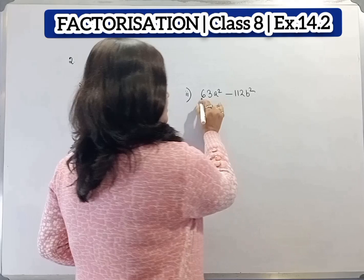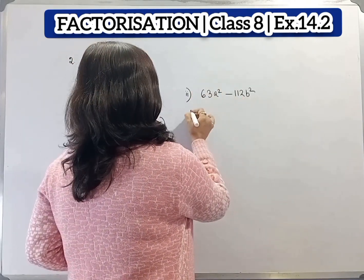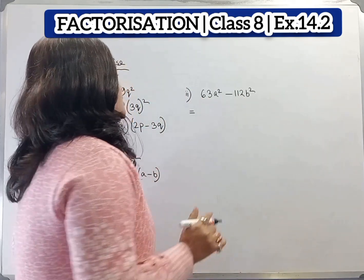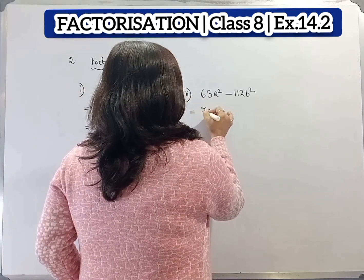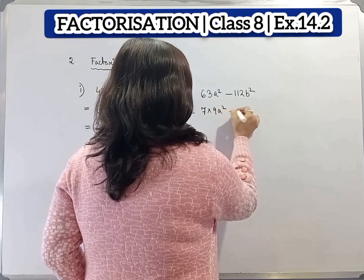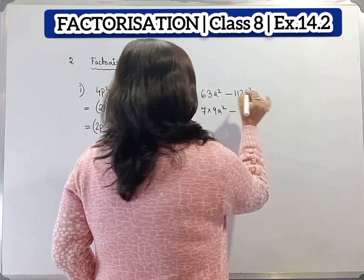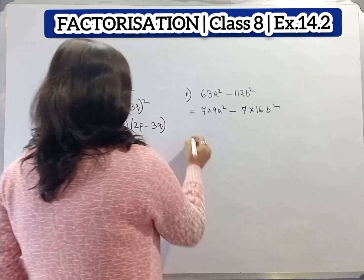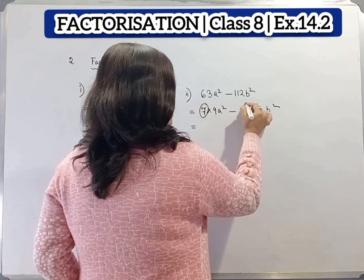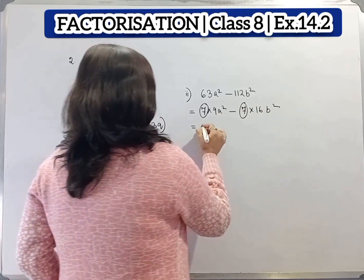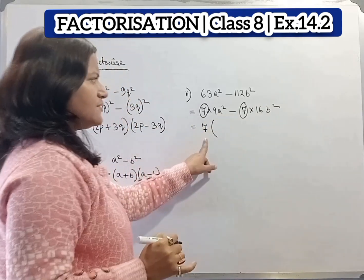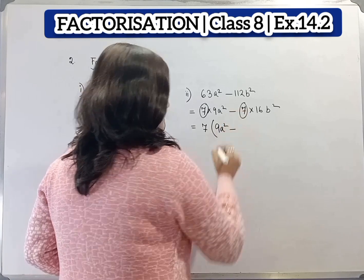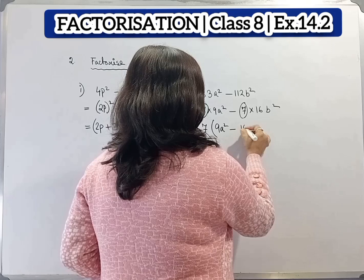Now second question: 63a square minus 112b square. Now 63 and 112 are not perfect squares. 63 equals 7 times 9, and 112 equals 7 times 16. From these two terms we can take 7 as common. As I have taken 7 as common, from the first term 9a square is left, then minus, and from the second term 16b square is left.